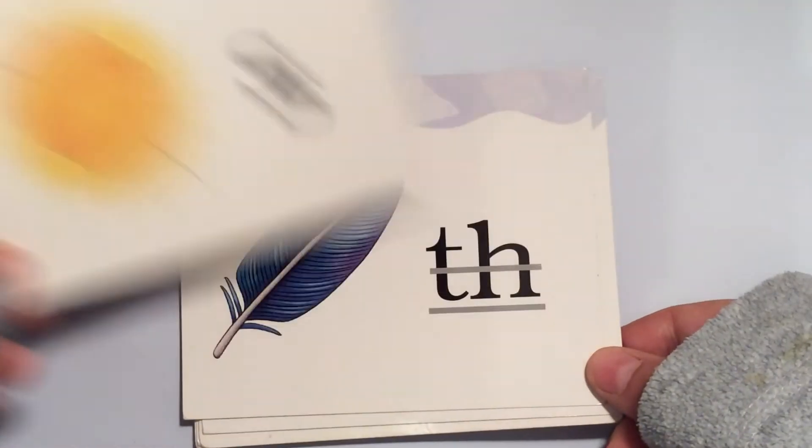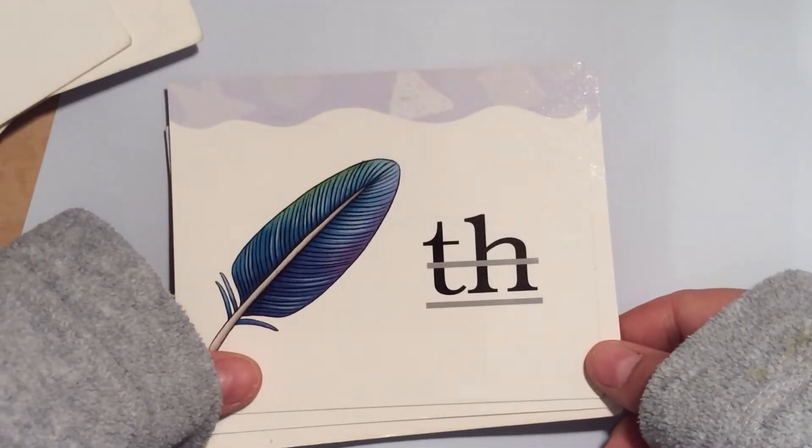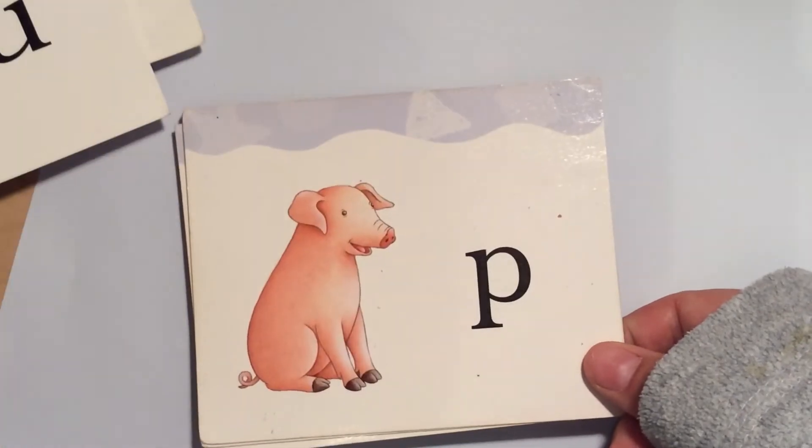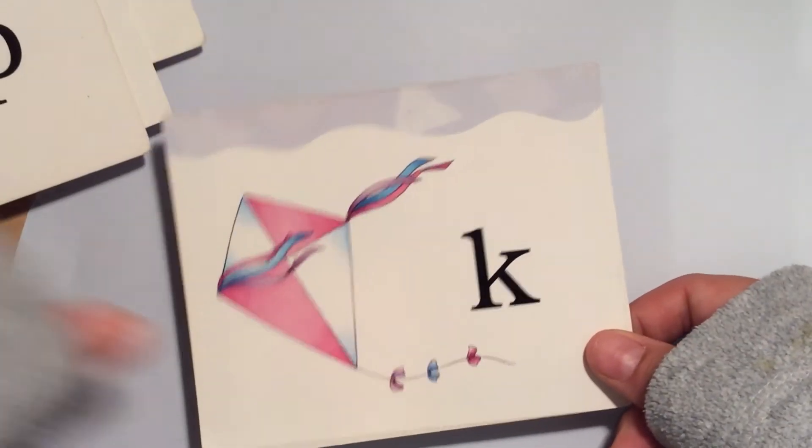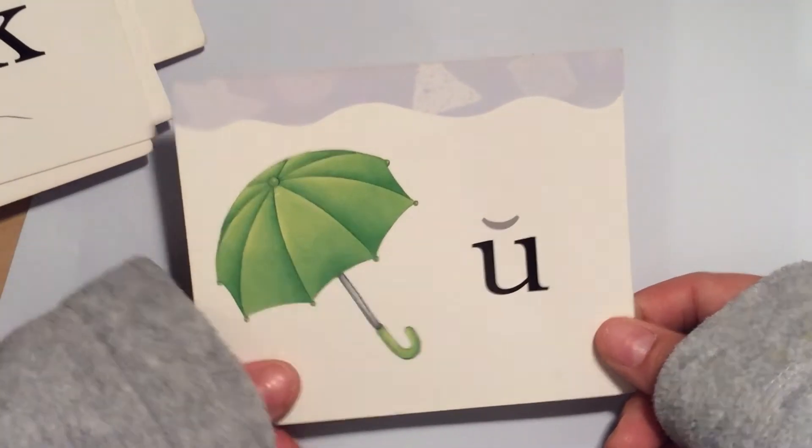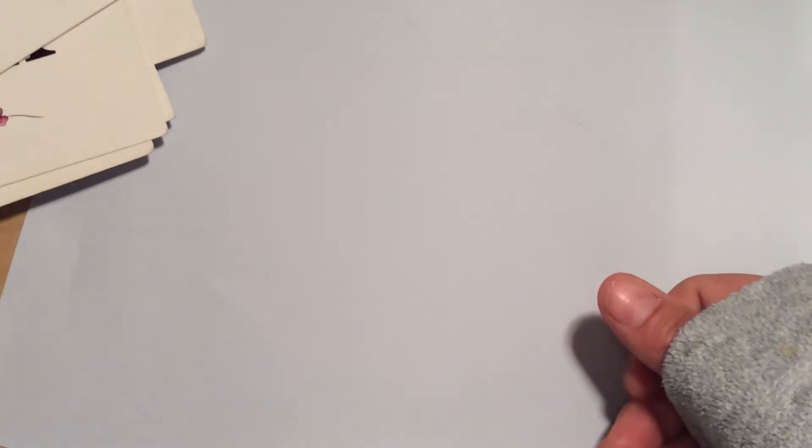Feather Z, Unicorn U, Pig P, Kite K, Umbrella U. All right, so those were your keyword pictures.